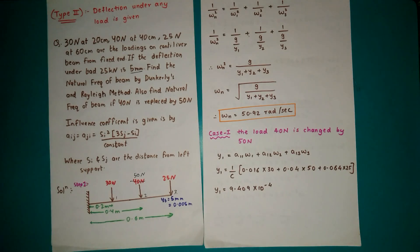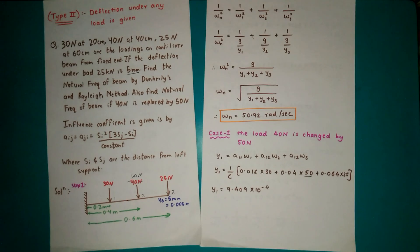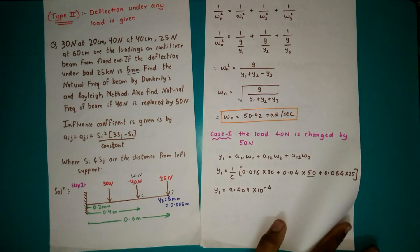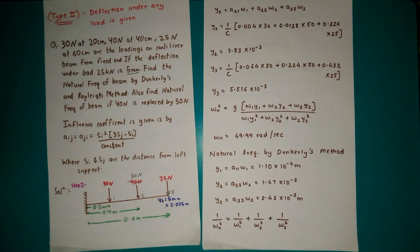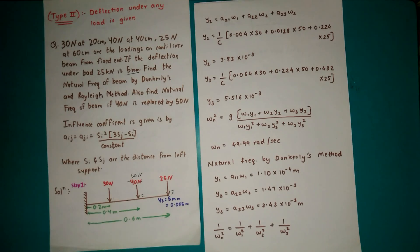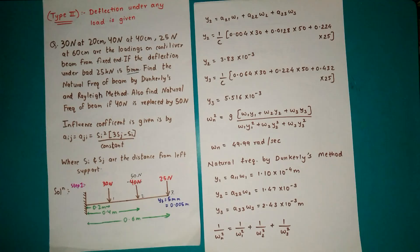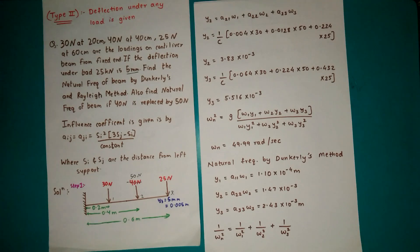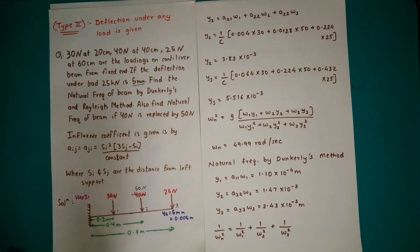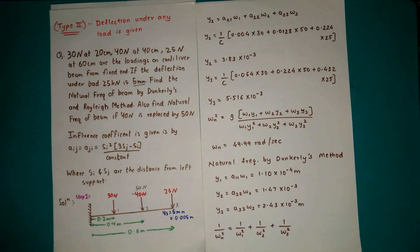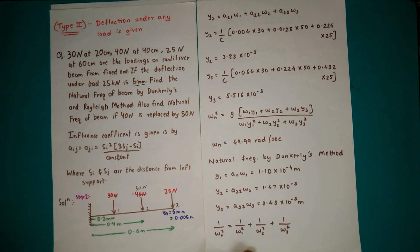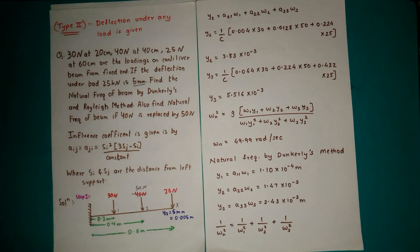Y1 is given by A11*W1 + A12*W2 + A13*W3. Here A11 = 0.016, W1 is 30 N, A12 = 0.04, and W2 is now changed to 50 N. A13 value is also taken with the same coefficients — the procedure ahead is similar to the first part. You just have to change the value of W2 to 50 in every equation and then put the values in the calculator properly to find omega_N.